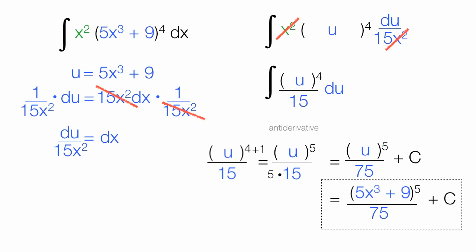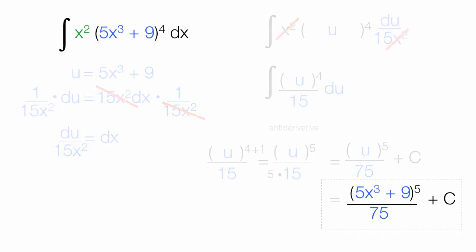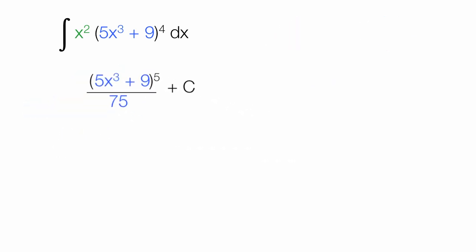Always check your answer by taking the derivative, and that should equal the original problem. So, the first thing I do when I take the derivative is lob off that c, because it's 0 or nothing. I use the chain rule, so I take this 5 and I multiply it times the front of the equation and subtract 1. Then I take the derivative of the inside, which is 15x squared. This gives me 5x cubed plus 9 to the fourth power times 15x squared divided by 75. These two 75s will cancel out, and that gets me to where I started in the beginning, which is good, which we want that.